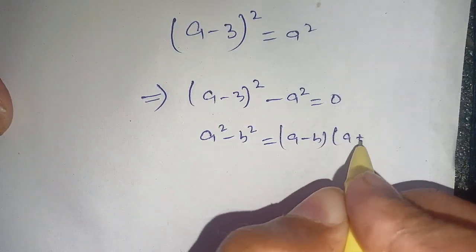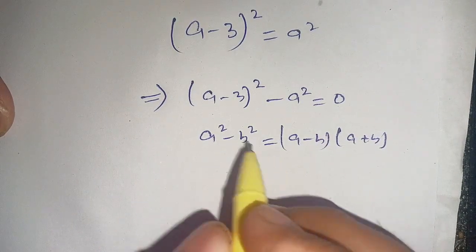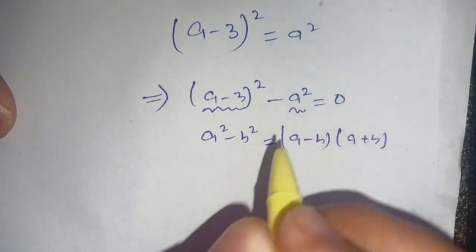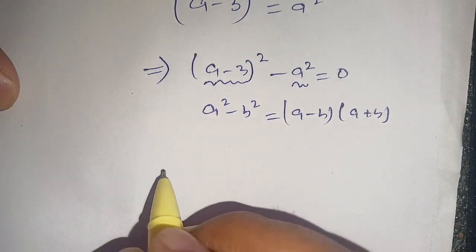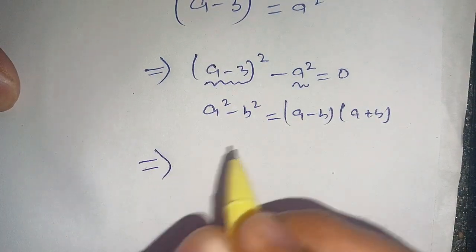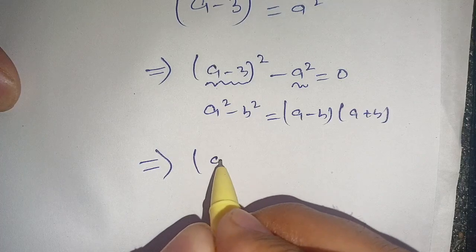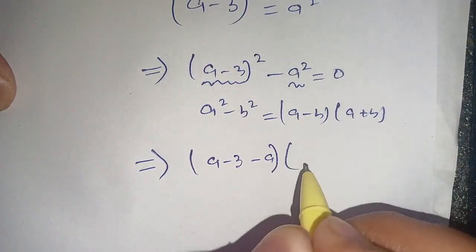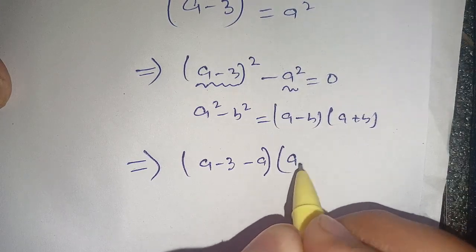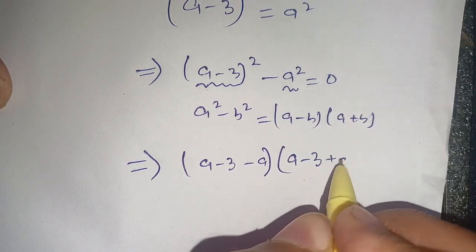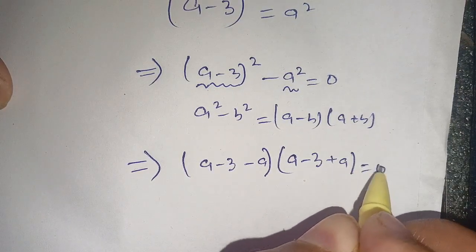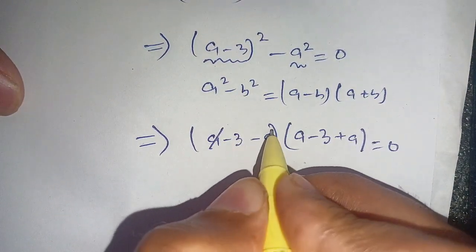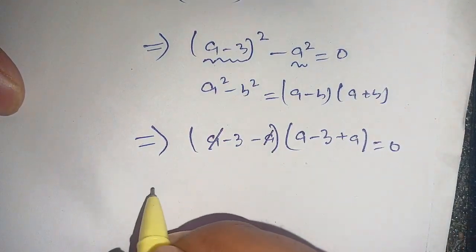Now we can consider a equal to (a minus 3) and b equal to a. Using this identity we get: (a minus b) means (a minus 3 minus a), times (a plus b) means (a minus 3 plus a), is equal to 0. Now we can cancel out the plus a and minus a.